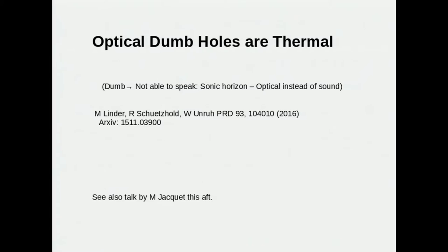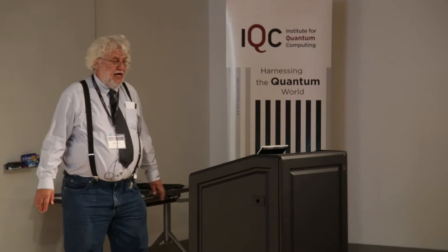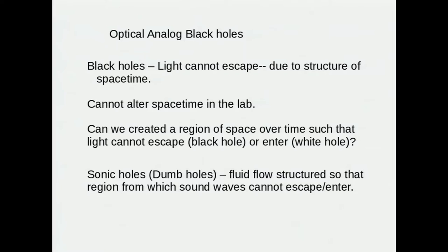This is work done with Malta Linder, Ralph Schutzholt and has been published. Also I point to you the talk this afternoon by Jacquet who is looking at a very similar model in a slightly different situation. These are systems that light cannot escape. We can't alter space-time in the lab. We can't make little black holes in the lab and so we've got to make do with something else. For example altering the refractive index of some material in the lab and trying to make a black hole or a white hole with that.